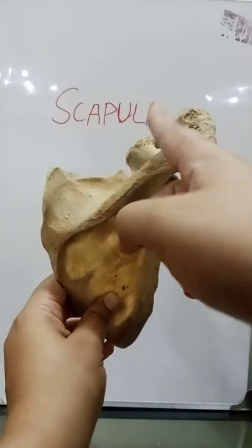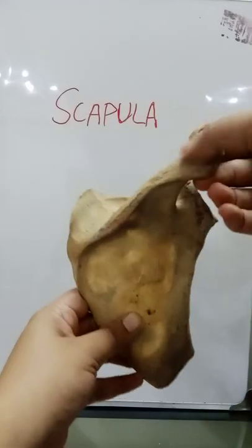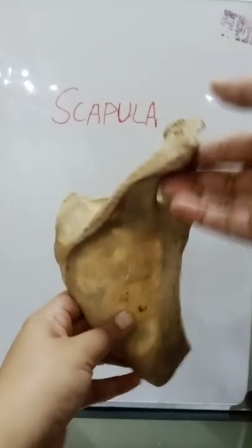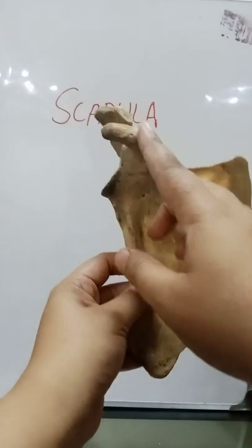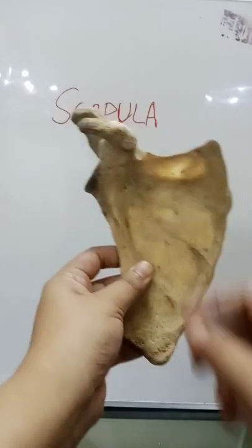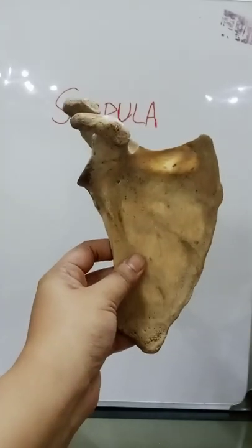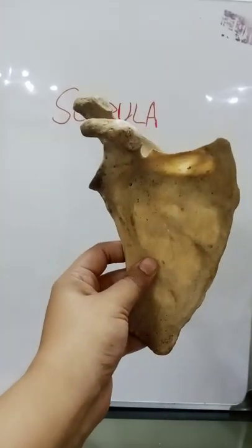The acromion process has two borders — medial and lateral — and superior and inferior surfaces. The third process is the coracoid process, a finger-like process directed laterally.